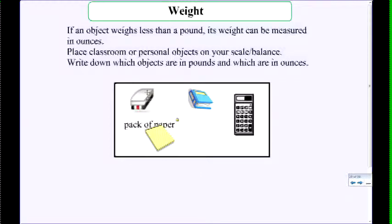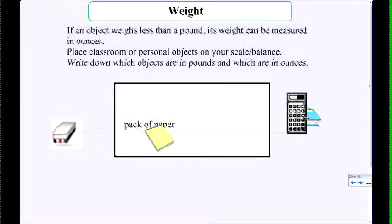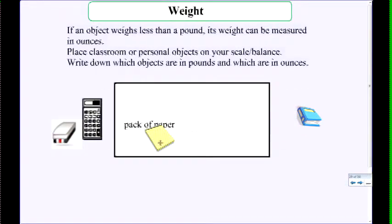Which one do you think is in ounces? An eraser? What about a book? Pounds. A calculator. Pounds? Nope. Going under ounces. A pack of paper? It could be ounces, but it's closer to pounds.